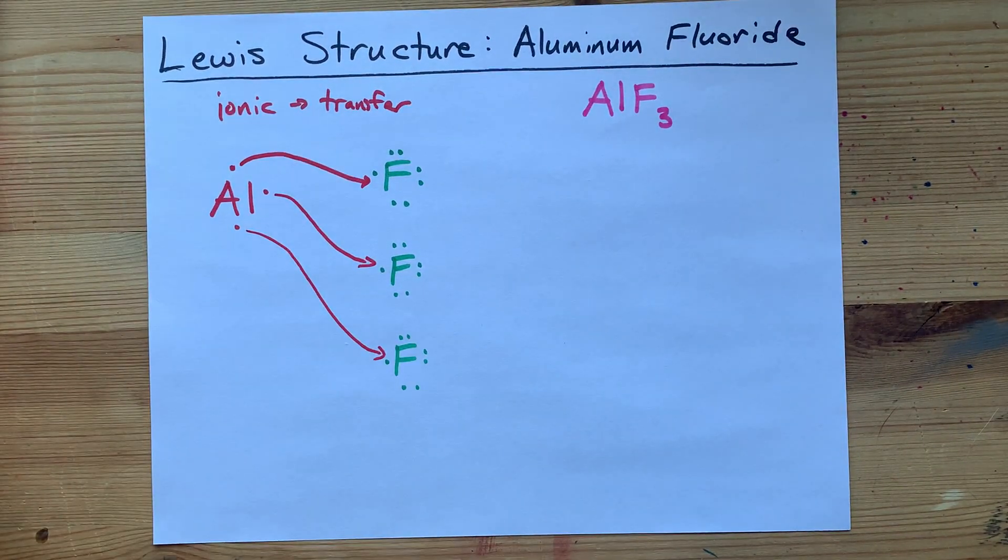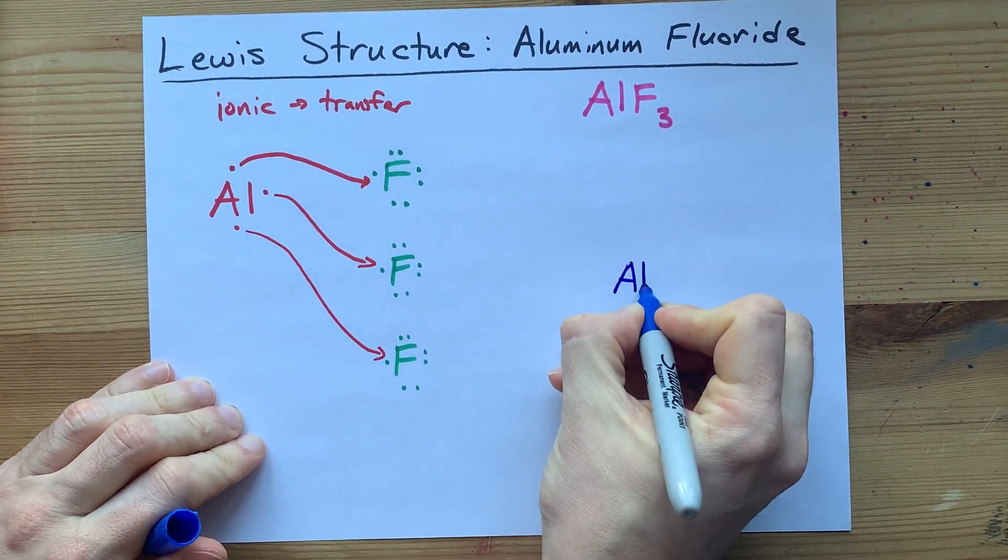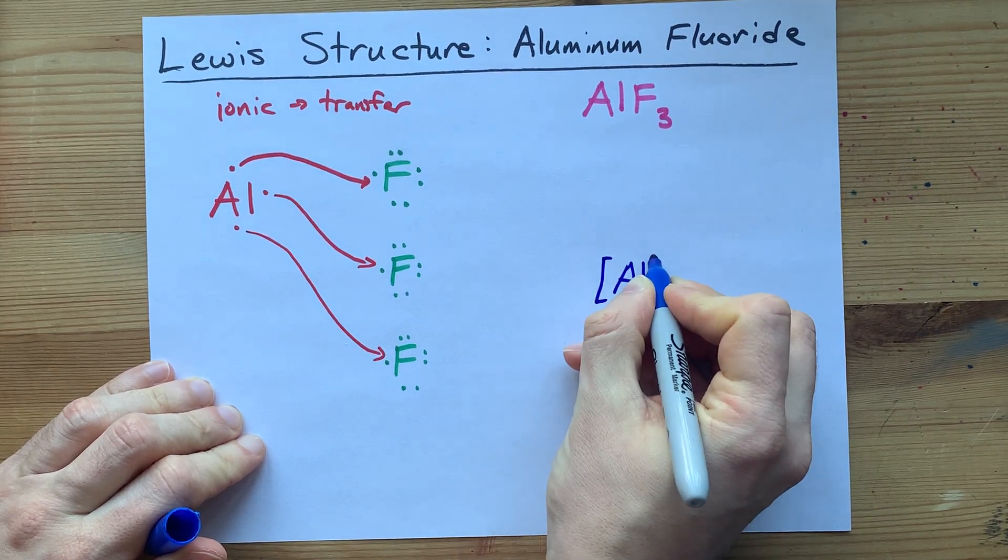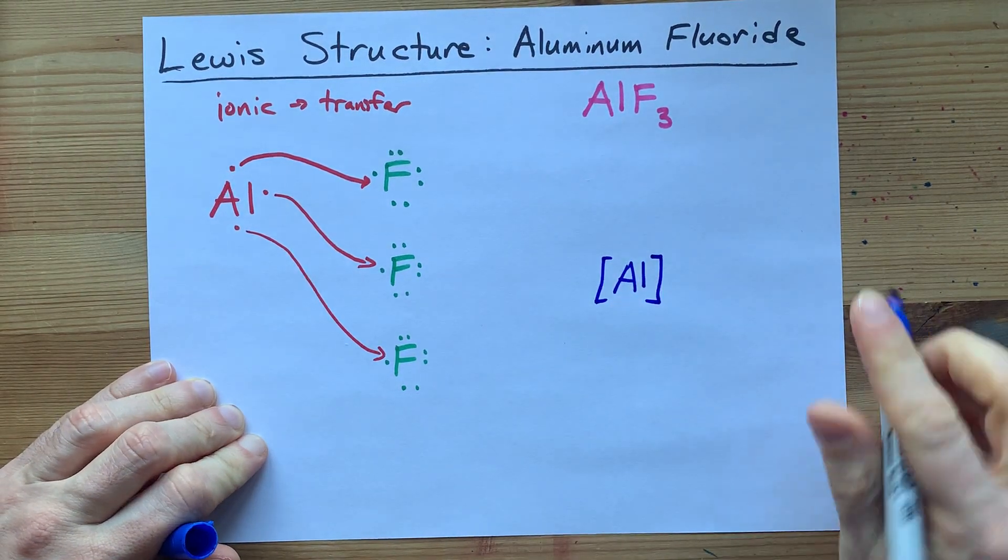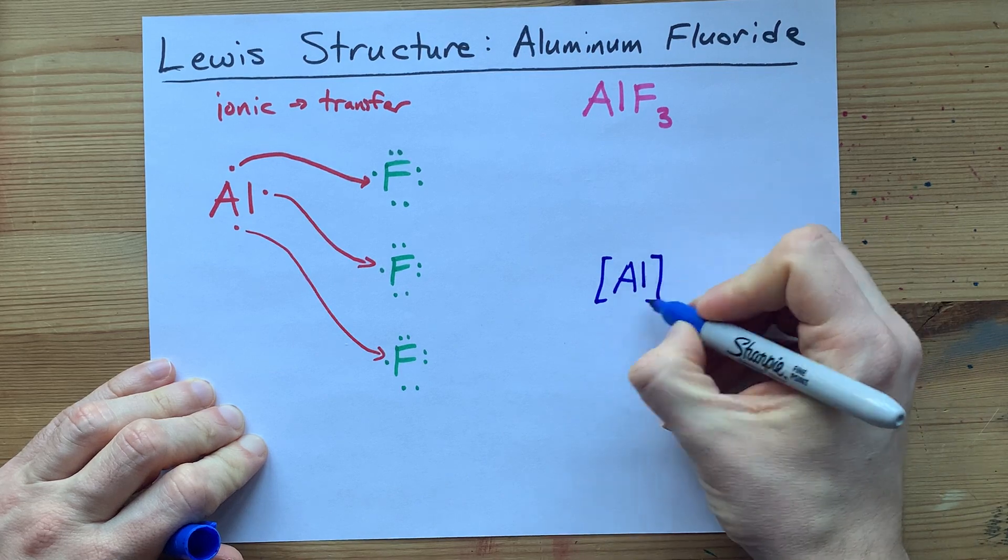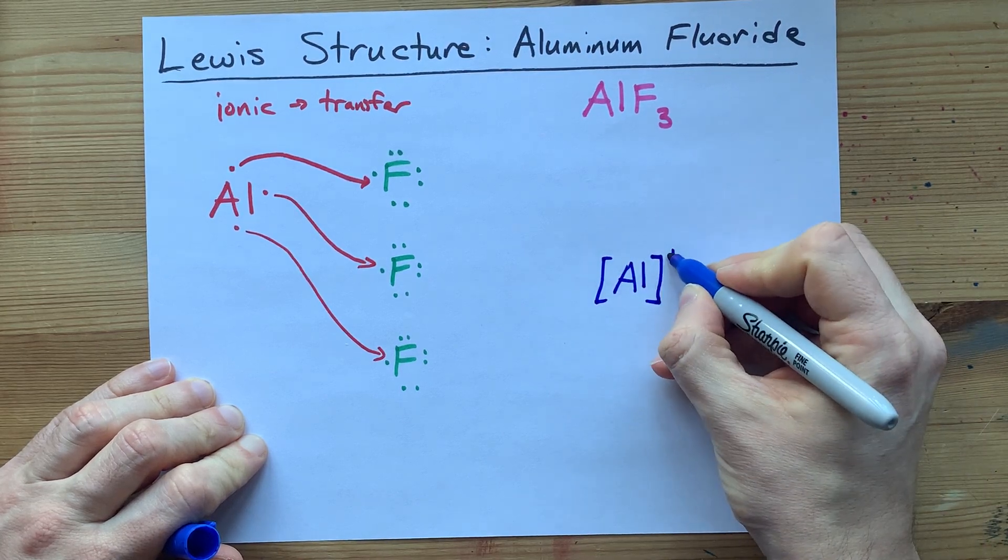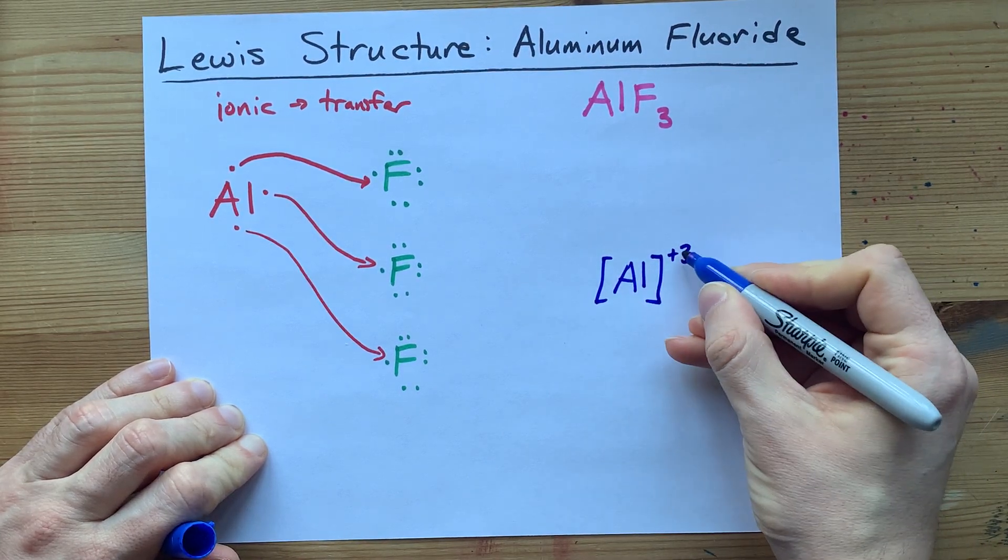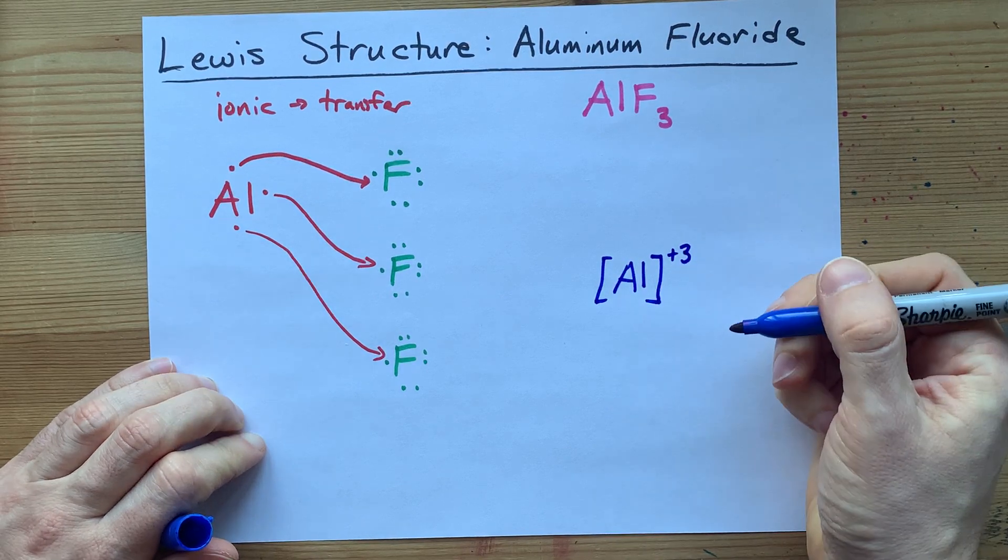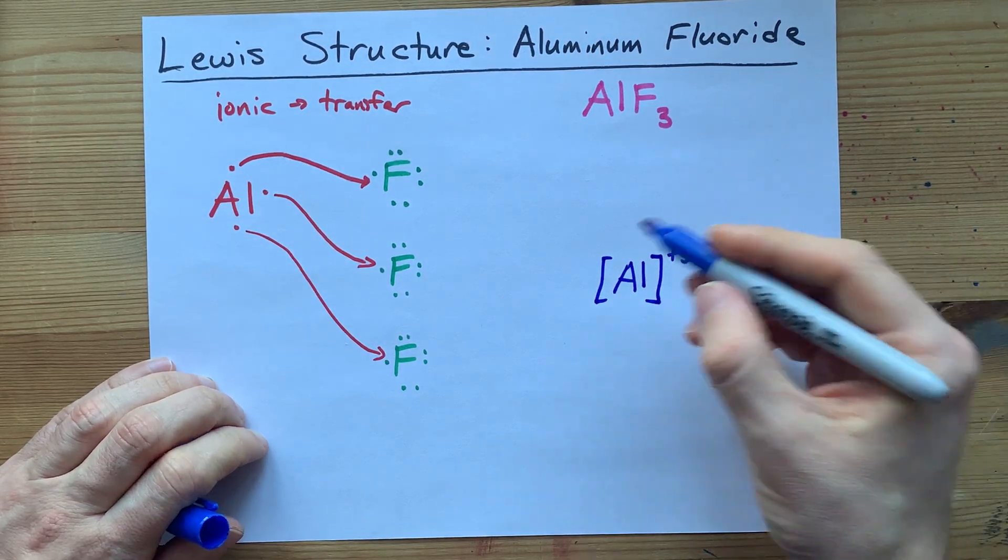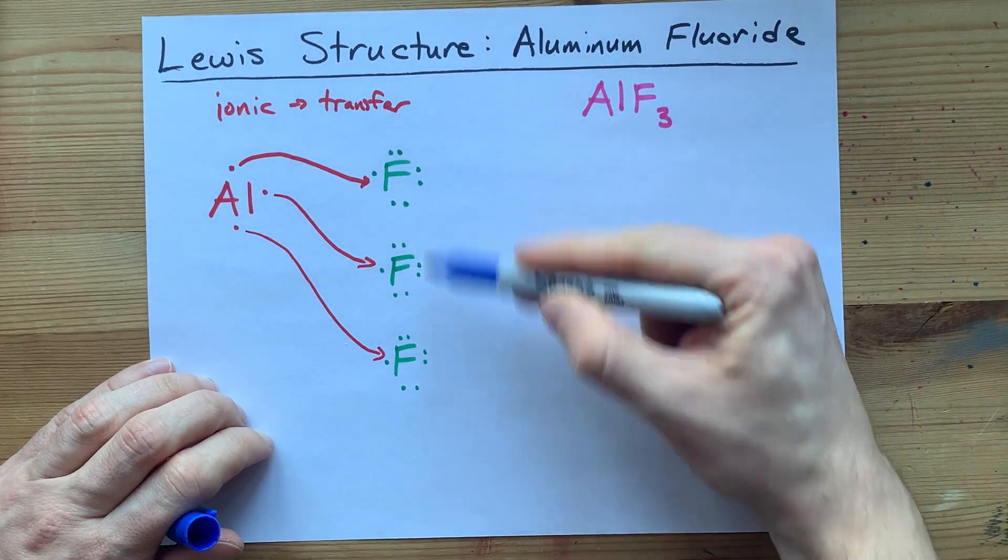To draw the final structure here, I would draw my Al atom in the center with no electrons on it, and I put it in square brackets because there's a charge. The charge here is plus three because it lost three negatively charged electrons.